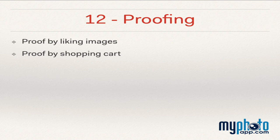Method 12: Proofing. My Photo App has two proofing features: the ability to like images and then send them to the photographer, and a shopping cart feature where orders are sent to the photographer for them to invoice and fulfill. At Cook Designer Portraits, we do both in-person sales and proofing depending on the client type.